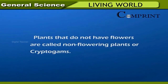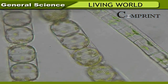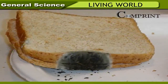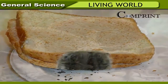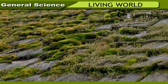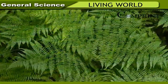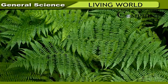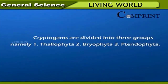Cryptogams are plants that do not have flowers. These include green algae that grow in water, fungi that grow on food materials, mushrooms that grow on garbage heaps, soft bryophytes growing on wet walls, and fern plants used as ornamental plants. Cryptogams are divided into three groups: one — Thallophyta, two — Bryophyta, three — Pteridophyta.